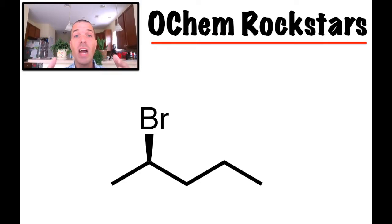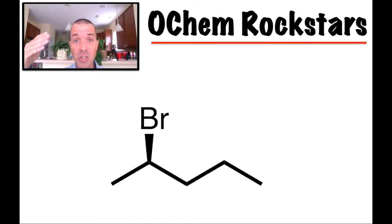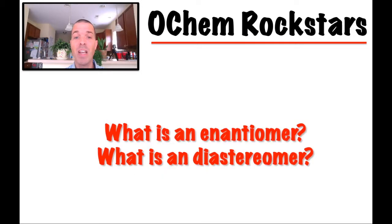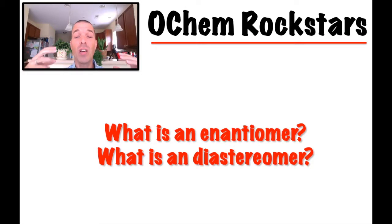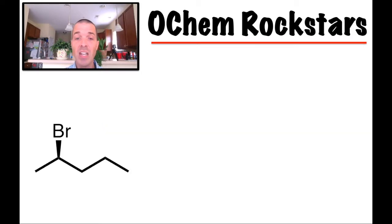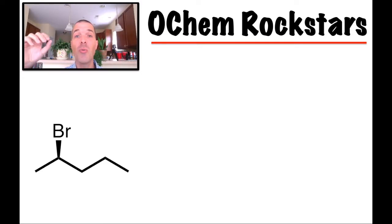What we wanna start with is one chiral center — or stereogenic center, or stereocenter; those are all the same terms. We wanna figure out what the enantiomer is. What is an enantiomer and what is a diastereomer? I think it's easiest to start with the enantiomer and understand how to draw enantiomers, because once you get that, it's easy to find the diastereomers. So let's look at this molecule. I want you to draw the enantiomer of that right now, however you want to do that.